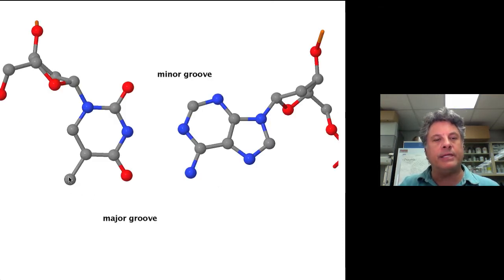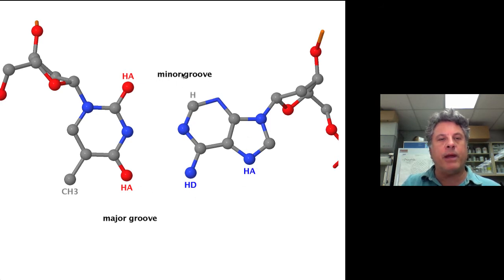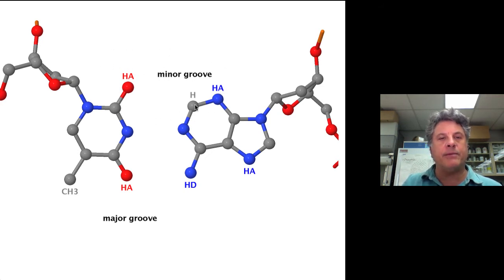Looking at the major groove: in this TA base pair, we have a methyl group on thymine, a hydrogen bond acceptor on thymine, and on adenine a hydrogen bond donor and a hydrogen bond acceptor — so CH₃, hydrogen bond acceptor, hydrogen bond donor, and acceptor. Whereas in the minor groove we have hydrogen bond acceptor, just a hydrogen atom on a carbon, and a hydrogen bond acceptor. In terms of symmetry, the atoms available in the minor groove are symmetrical for proteins recognizing them.